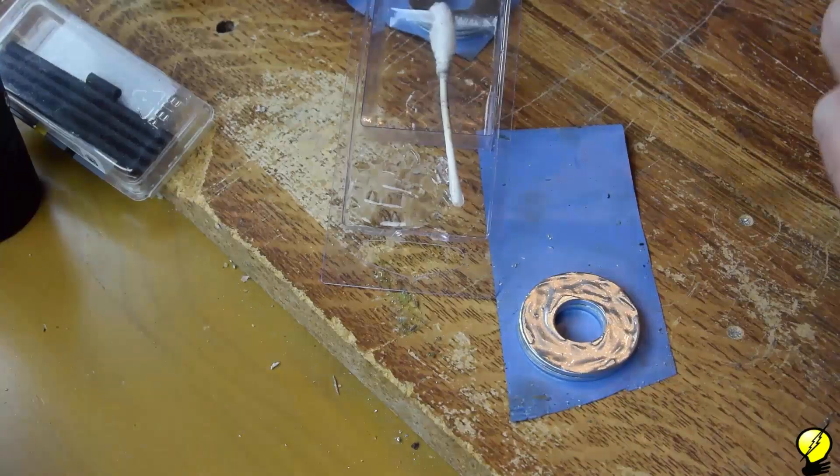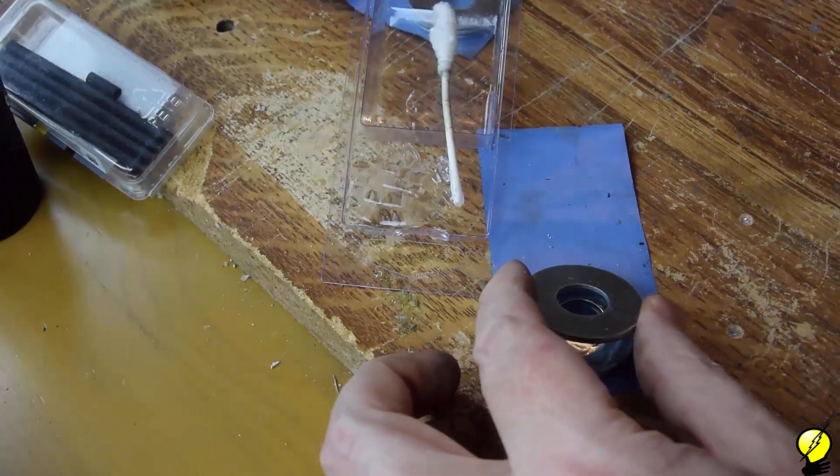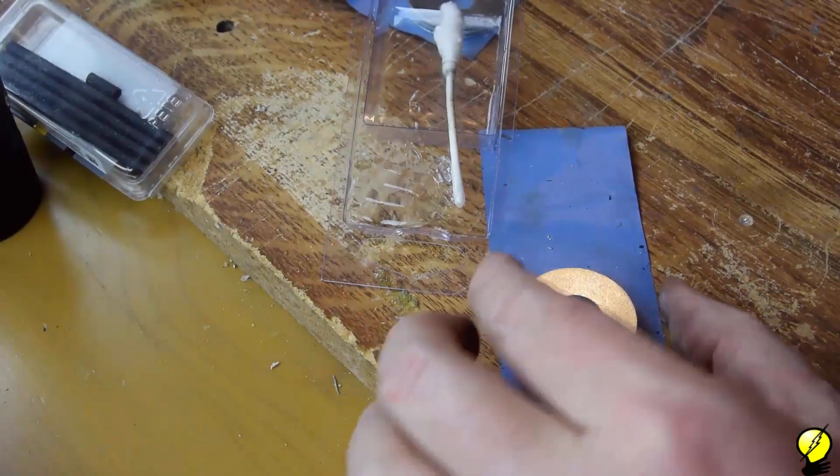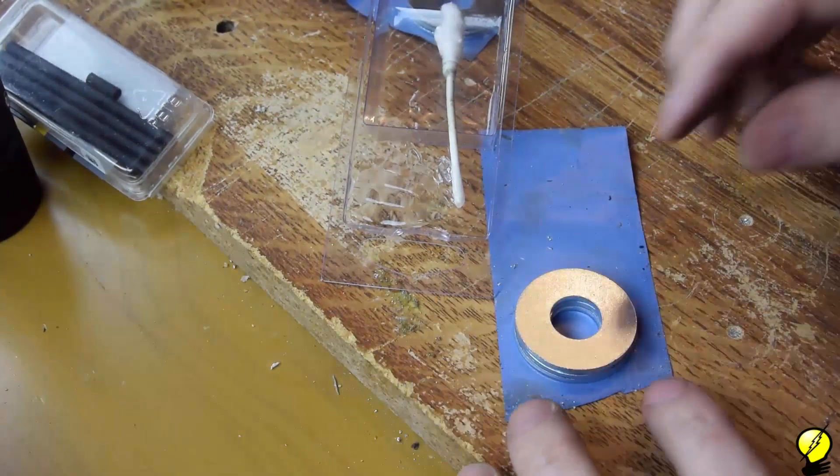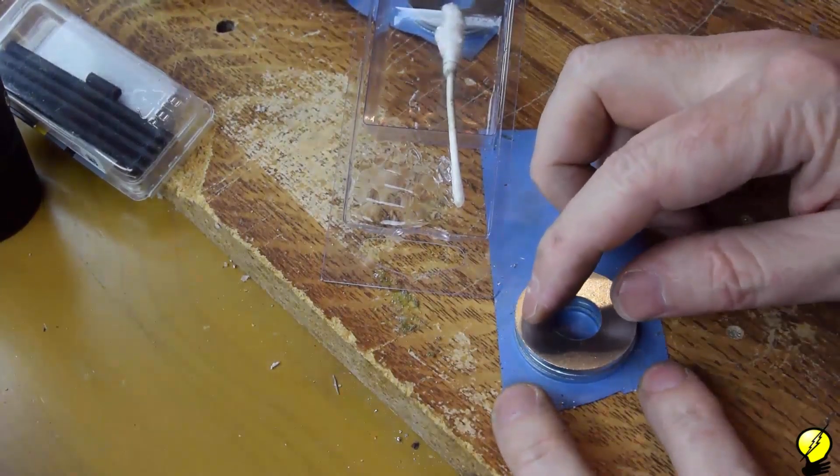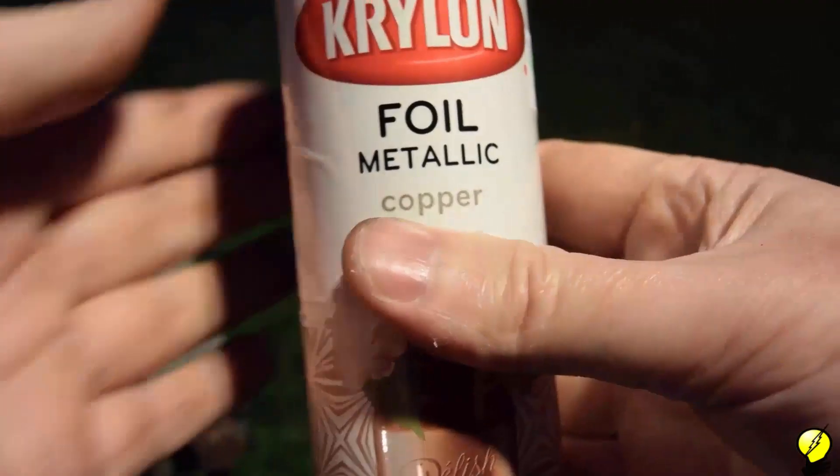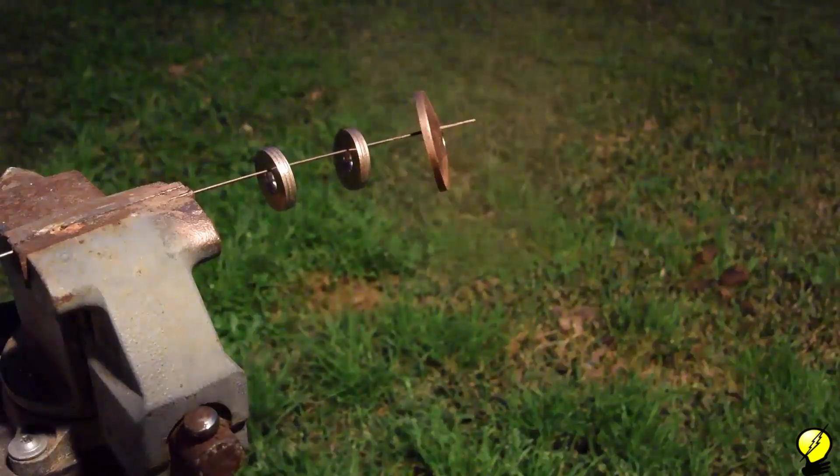Now on to the barrel decoration. Glue two sets of three washers together. And then use copper spray paint to paint them. Also spray paint the flange while you're at it.